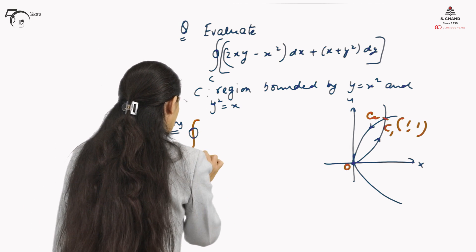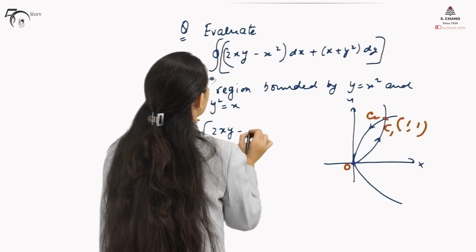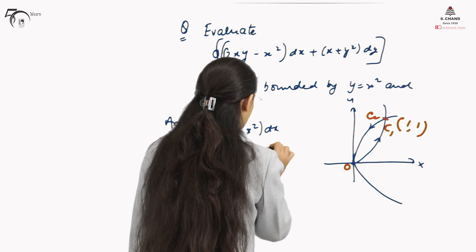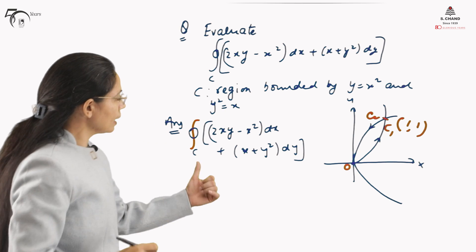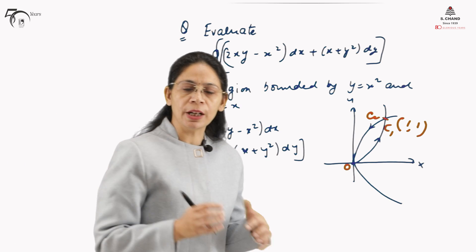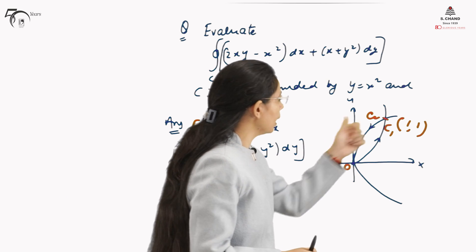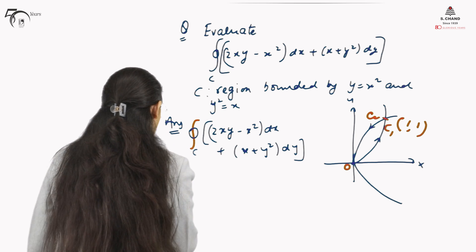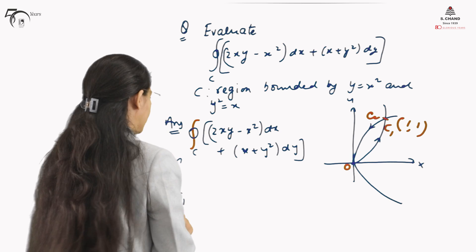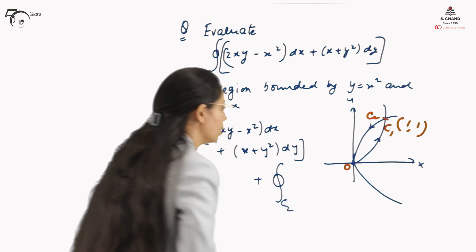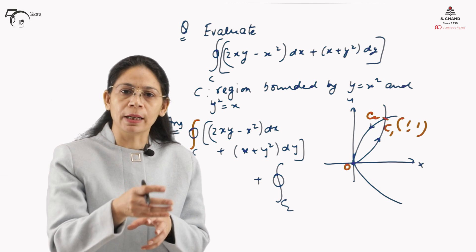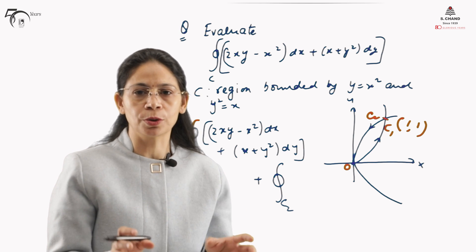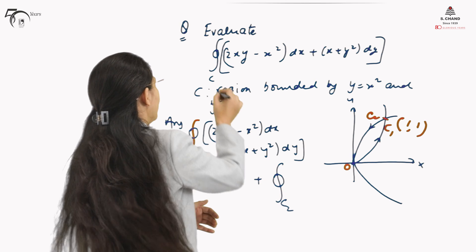The integral over C of (2xy − x²)dx + (x + y²)dy has been divided: the entire region C is covered by two curves c1 and c2. We divide this integral into two parts — one calculated over c1 and the same integrand calculated over c2 — and take the sum to find the final value.